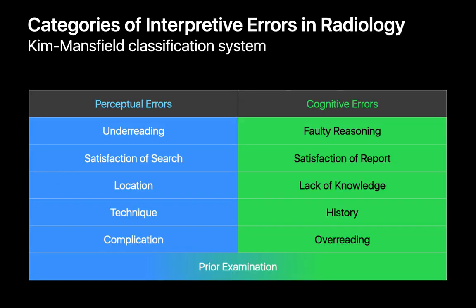None of us is absolutely perfect, but we all endeavor to be as close to perfect as possible — most importantly for our patients, but also a little bit for our own egos too. Understanding the different ways interpretive errors can happen and potential remedies for these errors is an important step in avoiding these sorts of problems in the future.